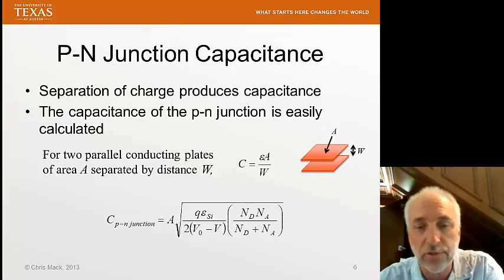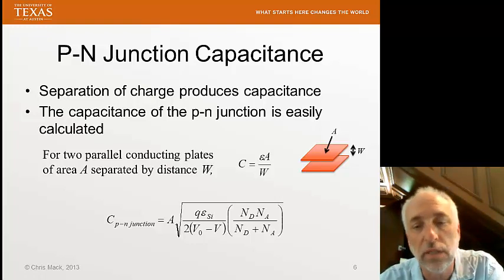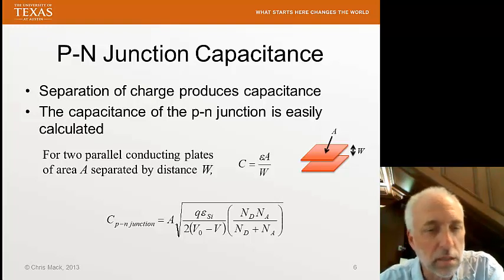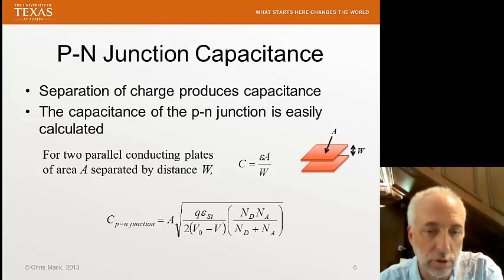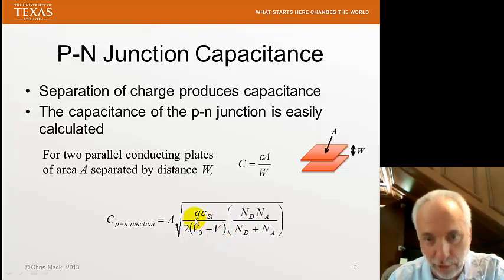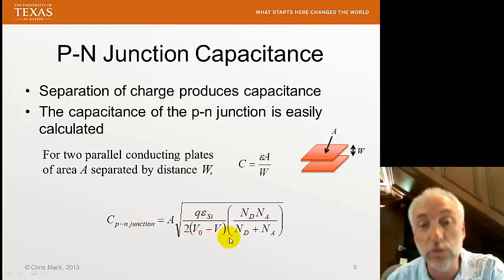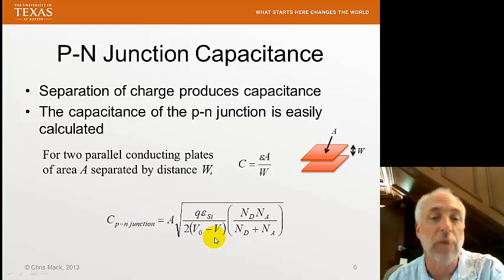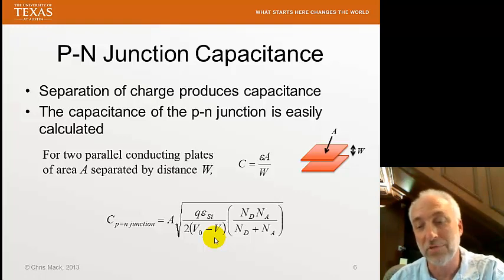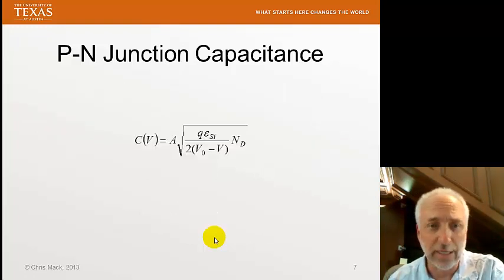Well, we know what W is from before. So we simply plug that in and it tells us the capacitance of the P-N junction. And this allows us to create or build a capacitor if we want to. But normally, the issue here is not that we're trying to build a capacitor. It's just that capacitance is built in to the properties of a P-N junction. You can see because we've included the possibility of a bias voltage that the capacitance will change depending on how much I bias the P-N junction. And that has some interesting properties or capabilities.